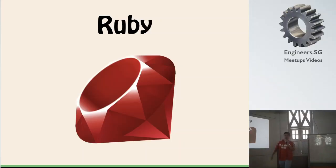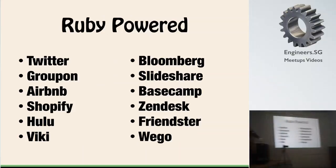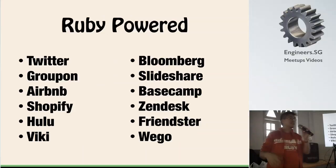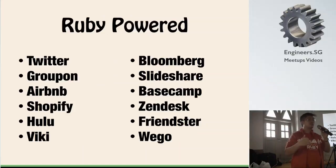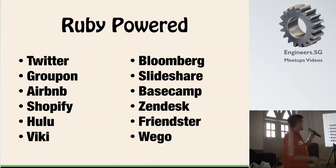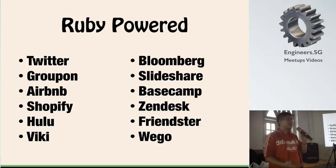Ruby is a programming language, and these are some of the web applications powered by Ruby. Twitter — did you know Twitter was written in Ruby on Rails? It has evolved and changed its internals, but when it first started it was created with Ruby on Rails. We also have Groupon, Airbnb, Shopify, Hulu, Viki, Bloomberg, Slideshare, Basecamp, Zendesk, Friendster, WeGo, and more. These are just some of the web applications created with Ruby on Rails.